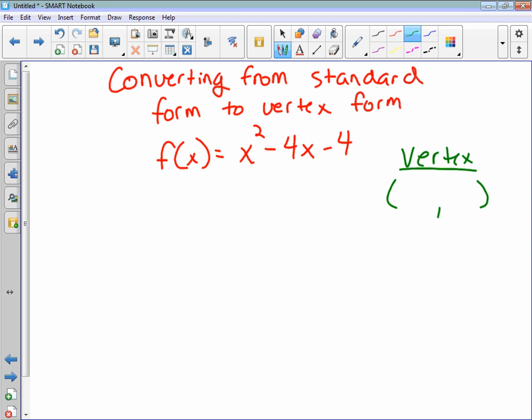So to find the vertex, to find the x value, we use the formula opposite of b over 2a. So in this case, b is negative 4, so it's a positive 4, divided by 2 times a, a is 1. That means that my x value of my vertex is 2.